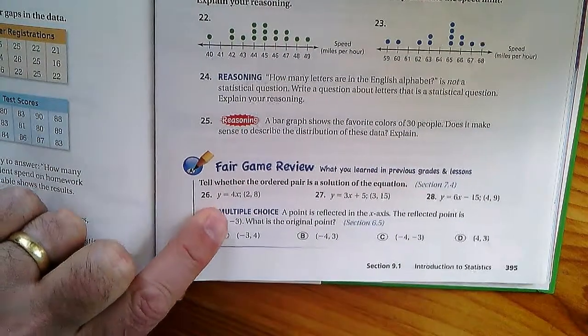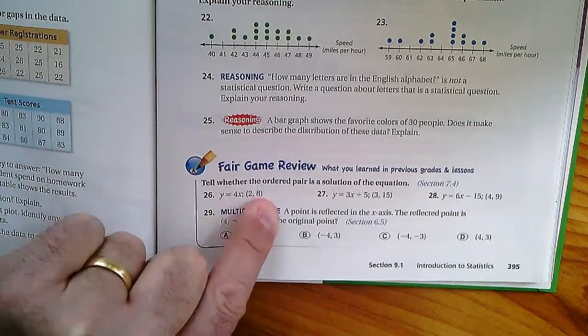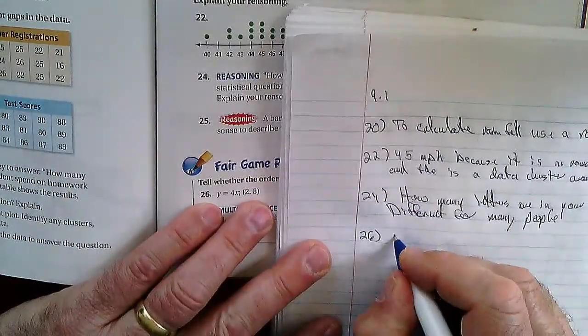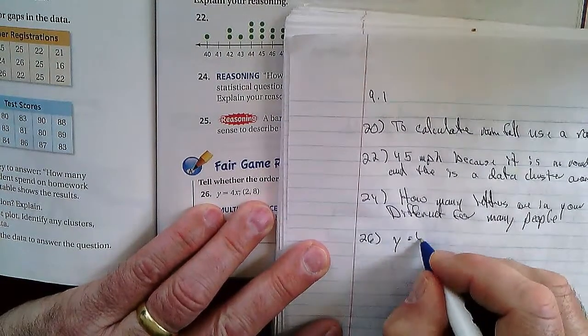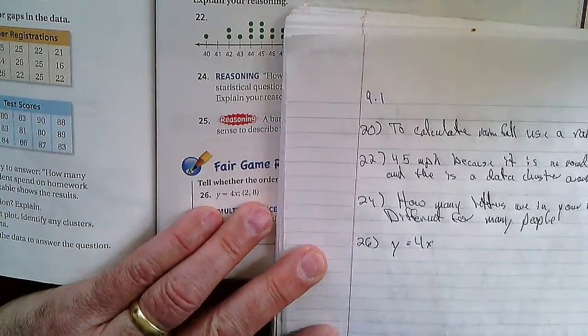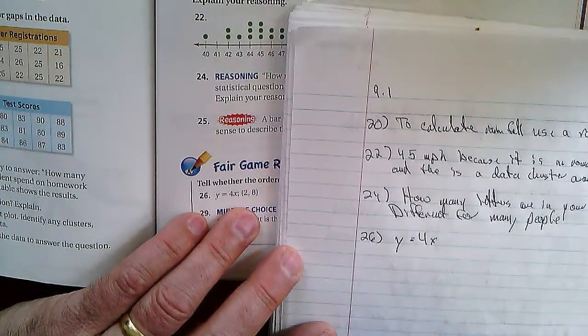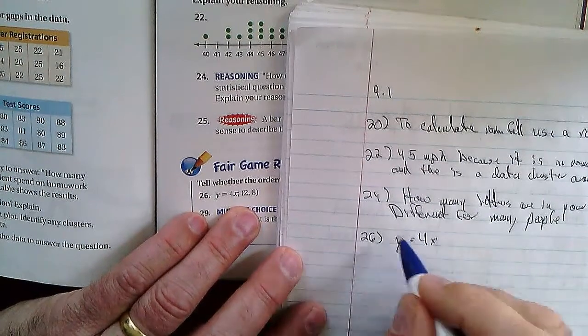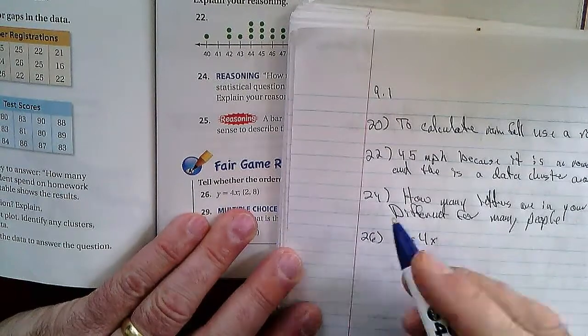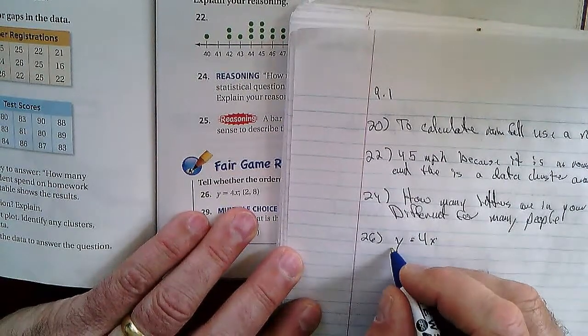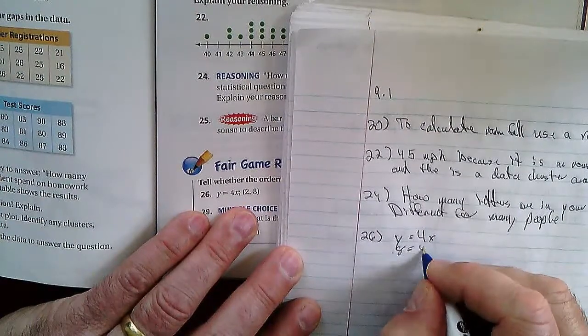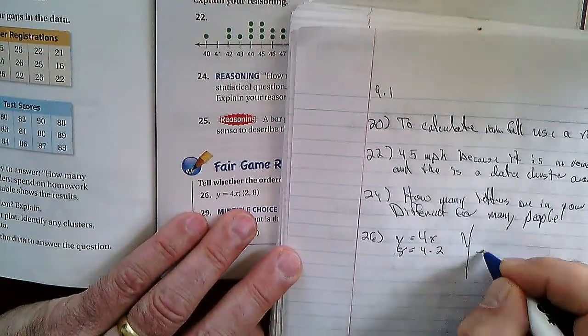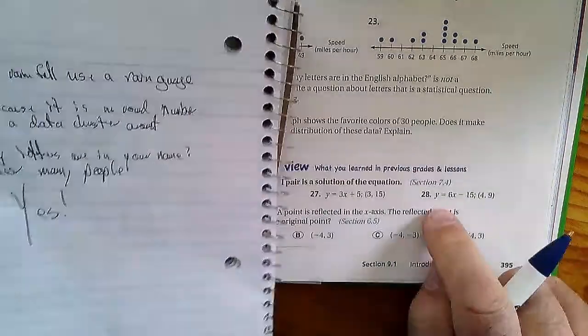These are all fair game reviews. Tell whether the ordered pair is a solution to the equation. I'm going to do a substitution, but before I do that I'm going to write it out. If I were doing my homework on the computer like you are, I would still write all of this out. Don't be lazy - this is going to help your thinking, especially for guys like me. I'm a tactile learner. So I'm just going to replace the x. Y is 8, equals 4 times 2 - is that true? 8 and 8, so this is yes, it's a solution.